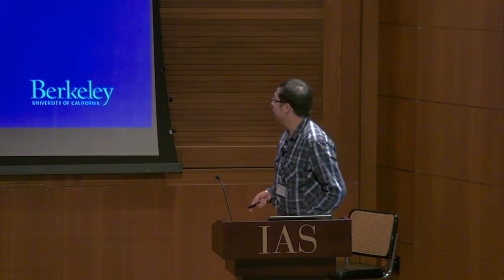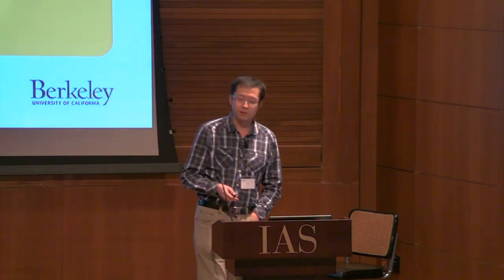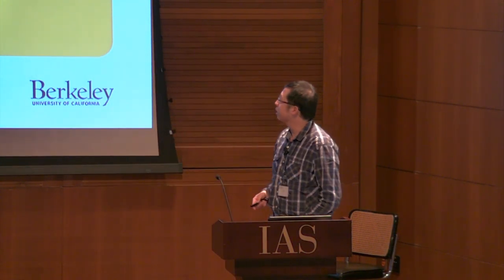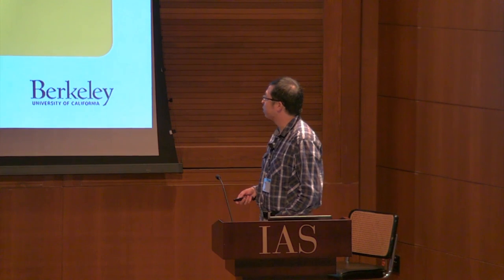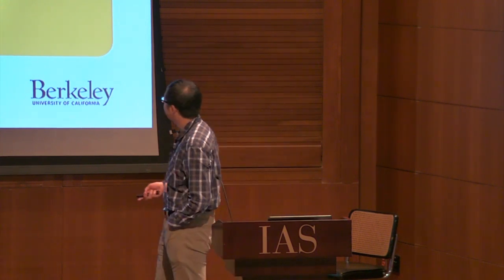Today I will be talking about how to overcome two problems: mode collapse and the curse of dimensionality. First I will be talking about general adversarial networks and mode collapse, and then later I will move on to nearest neighbor search and the curse of dimensionality.